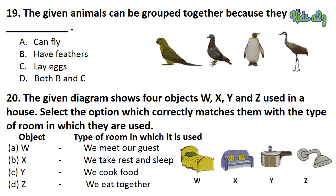Question 19: The given animals can be grouped together because they all dash. The answer is Option D. Question 20: The given diagram shows 4 objects W, X, Y and Z used in a house. Select the option which correctly matches them with the type of room in which they are used. The answer is Option C.